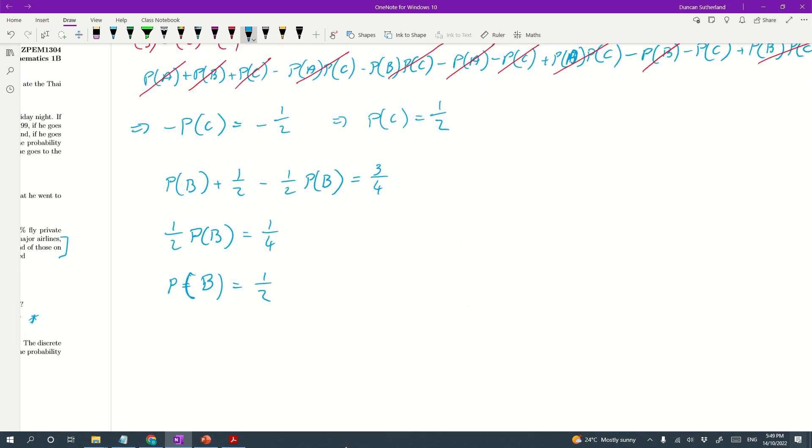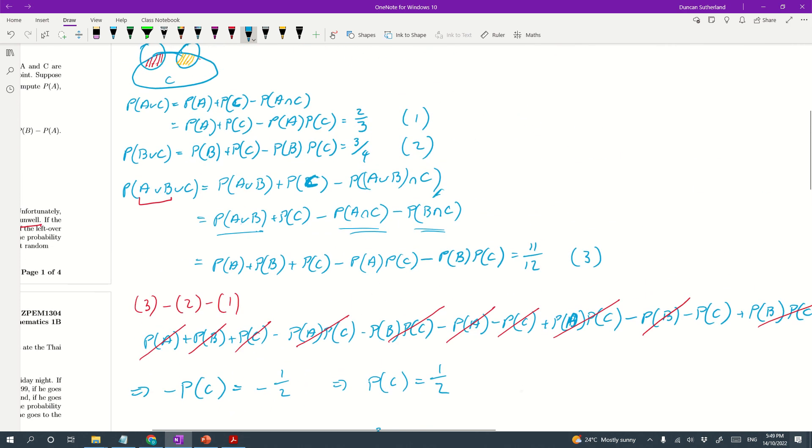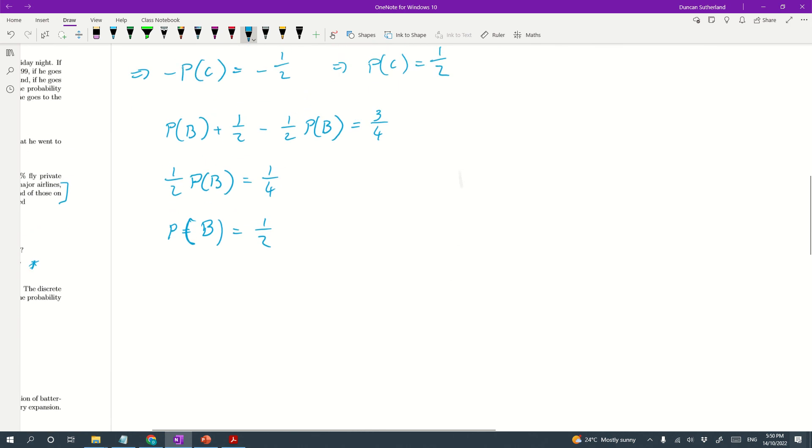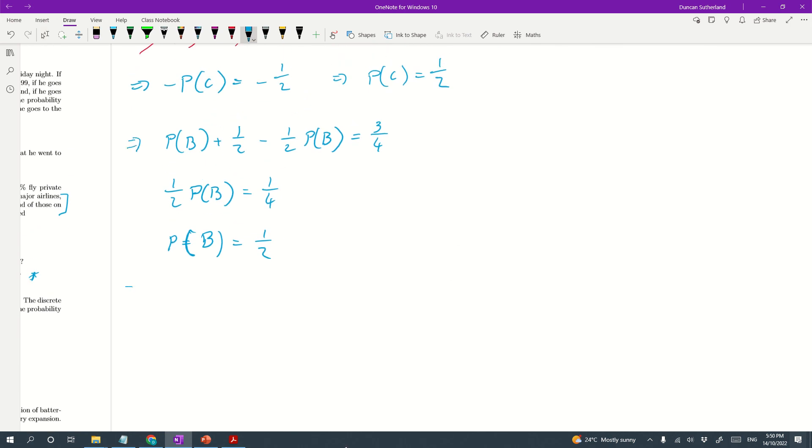And the last one is we take our value for PC and we stick it into this two thirds equation. So we also have PA plus a half minus a half PA equals two thirds. So this bubbles down to a half PA equals two thirds minus a half, which is a sixth. So PA equals third.